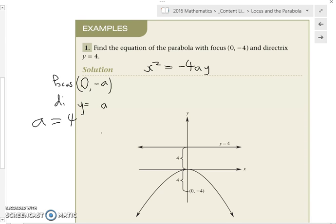Okay, so now we have to find the equation. What do we do? What form is it in? We've already drawn it so that we can see it, but we don't really need to because what form is it in? Minus 4ay, right? So we go x squared equals minus 4 times 4y. x squared equals minus 16y. Hooray!